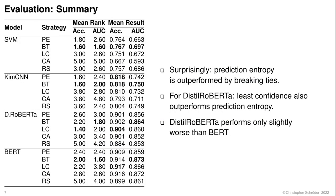In this table, we show on the left the mean rank of a strategy during a single run, when ordered by final accuracy or area under learning curve, and on the right the mean accuracy and area under the learning curve after the final iteration. Surprisingly, prediction entropy is outperformed by breaking ties. For DistilRoBERTa, even least confidence outperforms prediction entropy.